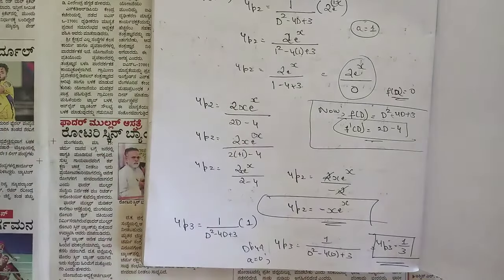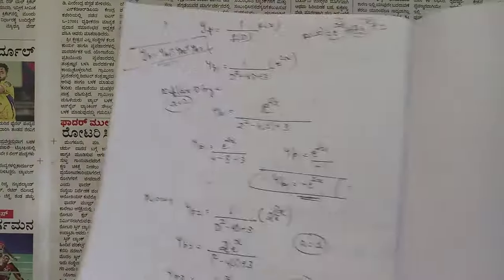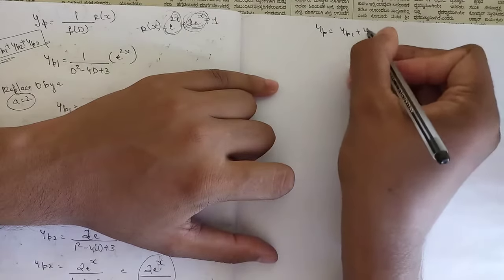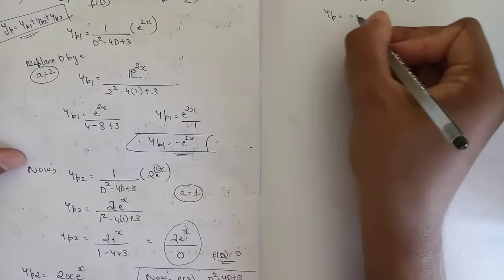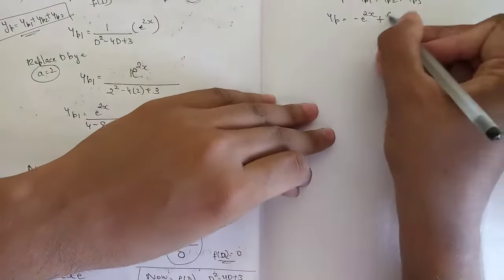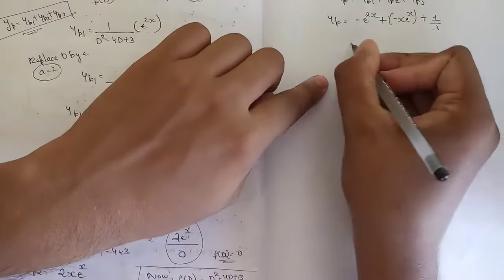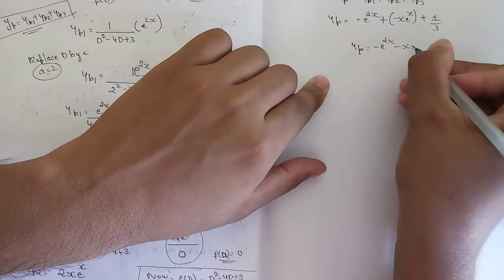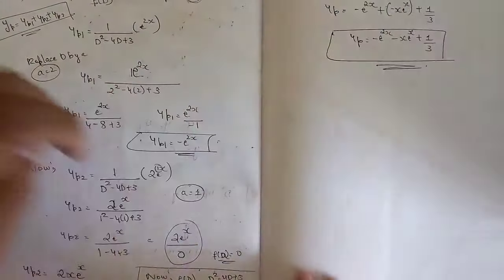Summing up: yp = yp1 + yp2 + yp3 = -e^(2x) - x·e^x + 1/3. This is the required particular integral.